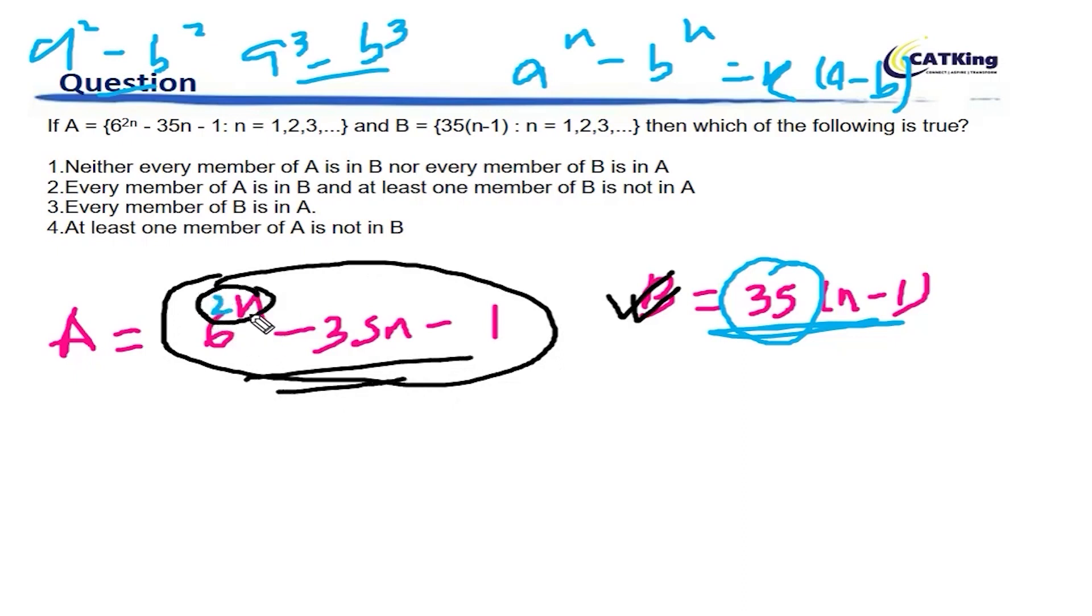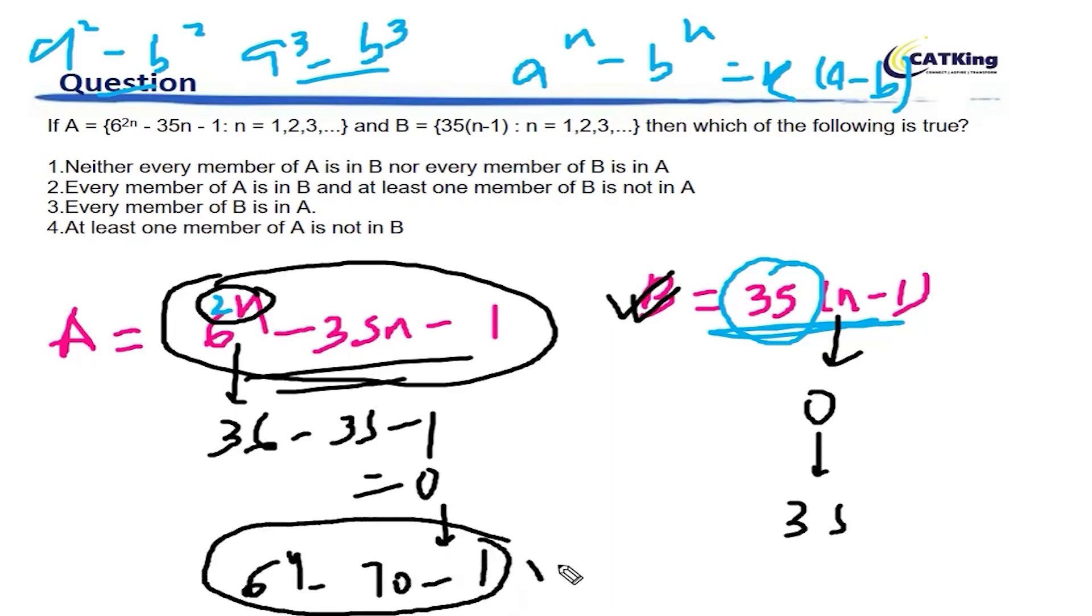When you put n equals 1, this is 36 minus 35 minus 1, which is 0. The first term when n equals 1, if you put this, is also 0. Next term here is 35. What is the next term here? You put n equals 2. This becomes 6 to the power 4 minus 70 minus 1. Now see, this is a huge term, it's a big term.